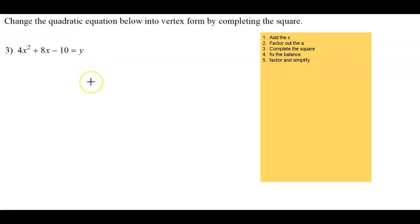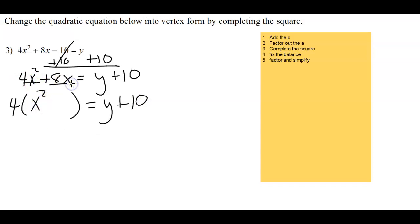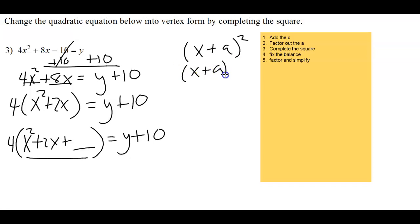Step 1: add the 10 to the other side. Step 2: factor out the 4 — divide both terms on the left by 4, leaving x squared and 2x. Step 3: completing the square. We add a number here to turn this into a perfect square trinomial, so that when we factor it, we get something like x plus a, squared — a trinomial that factors into two identical factors.